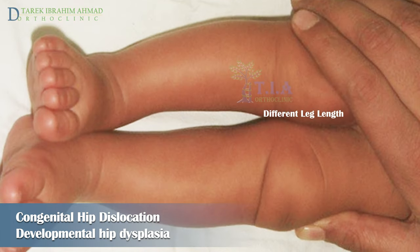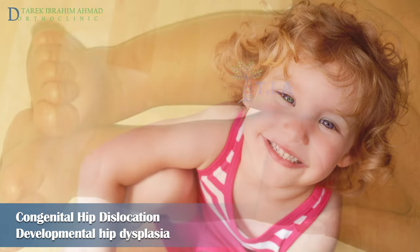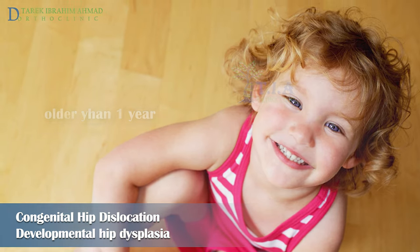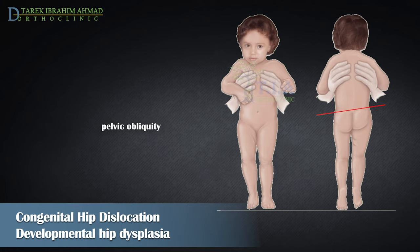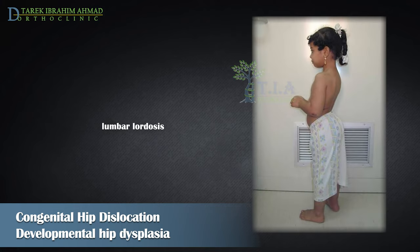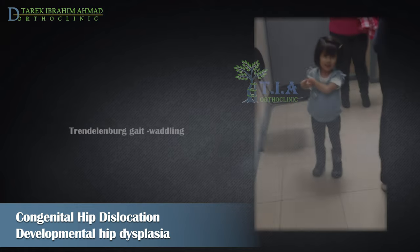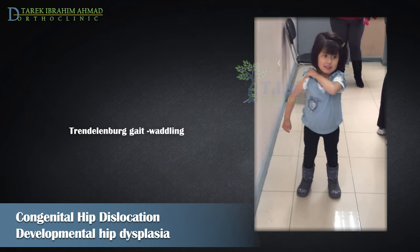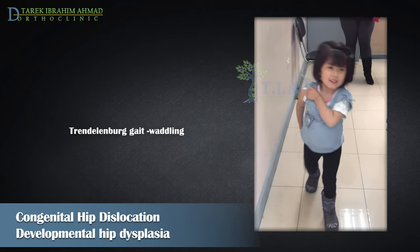In children older than one year, we find pelvic obliquity and lumbar lordosis in response to hip contractures resulting from bilateral dislocations. In a child of walking age, Trendelenburg gait results from abductor muscle insufficiency on the affected side.